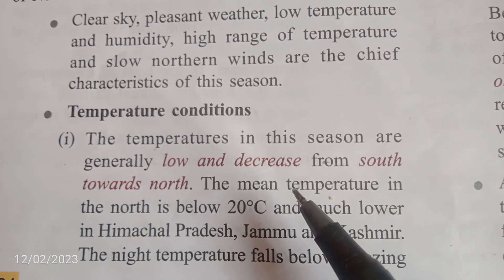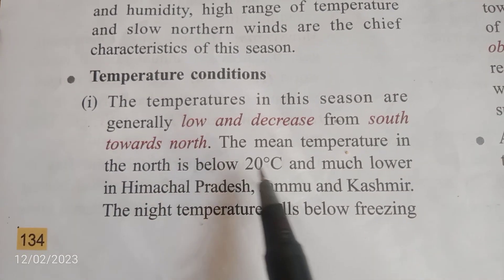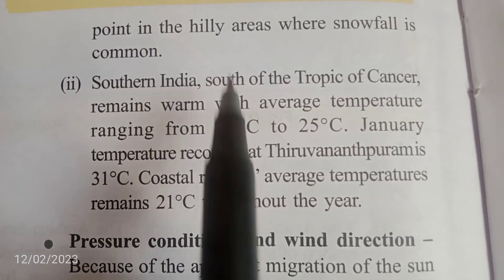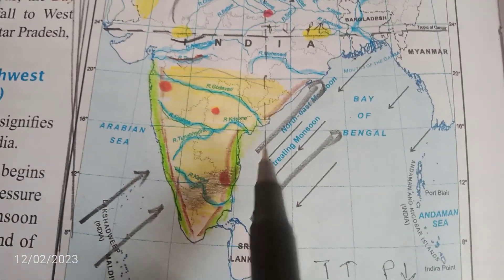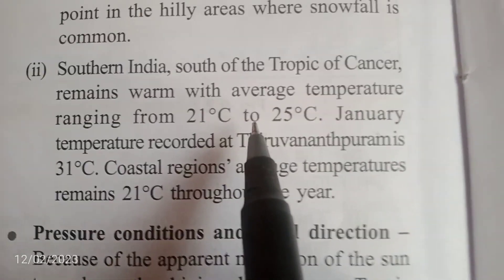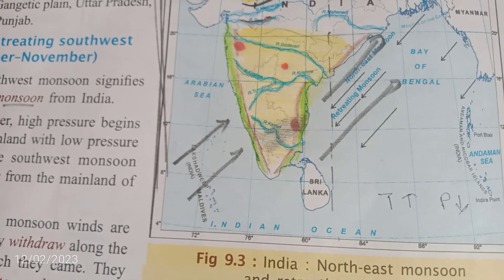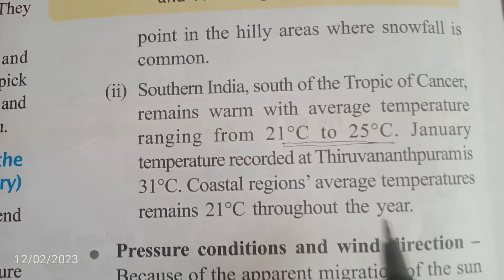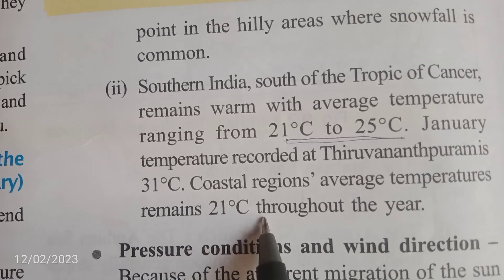High range of temperature and strong northern winds are the chief characteristics of this cold season. Temperature in the northern side falls below 20 degrees Celsius, especially in Himachal Pradesh and Jammu & Kashmir, where nights are freezing. In southern India, which is below the Tropic of Cancer, the average temperature is 21 to 25 degrees Celsius. The temperature does not decrease drastically there because it has oceans on three sides — that type of climate is known as the moderate type. Thiruvananthapuram recorded 31 degrees Celsius even in the cold season.